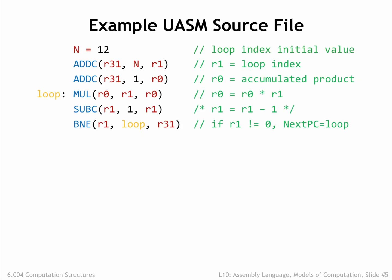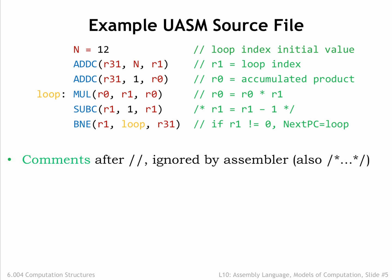Here's an example UASM source file. Typically we write one UASM statement on each line and can use spaces, tabs, and newlines to make the source as readable as possible. We've added some color coding to help in our explanation. Comments shown in green allow us to add text annotations to the program. Good comments will help remind you how your program works.